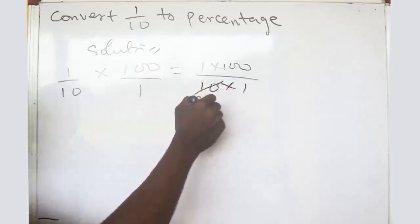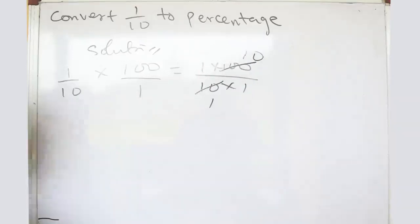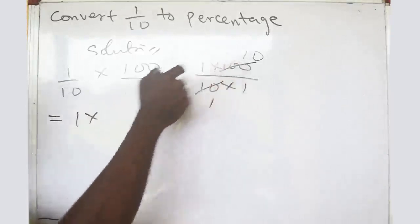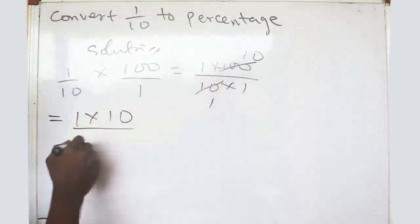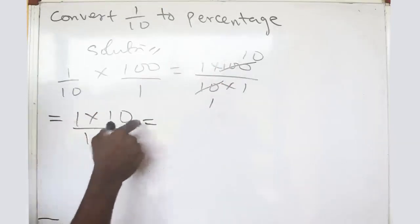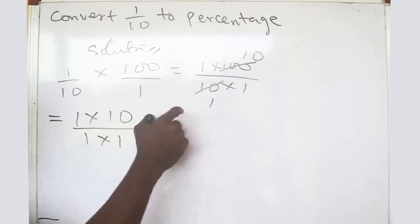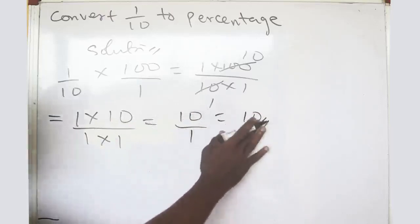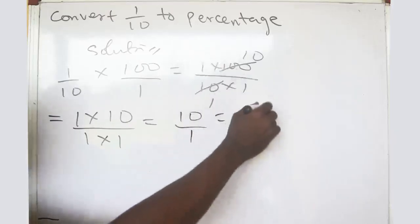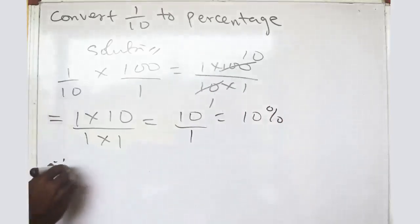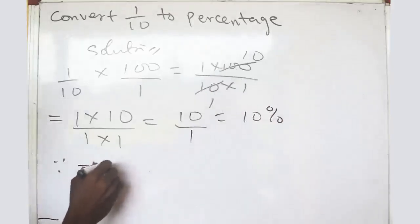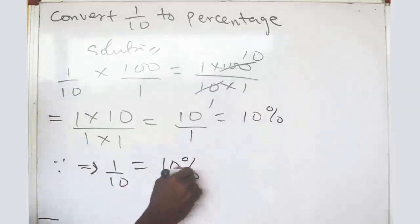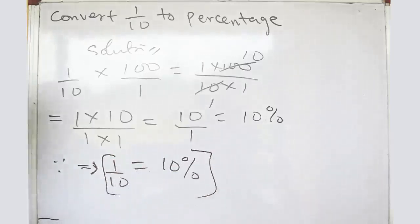Ten can divide itself into one hundred to give you ten, so we are left with one times ten all over one times one, which is ten. Since we are dealing with percentages, this implies that one over ten, which is a fraction, is equal to ten percent.